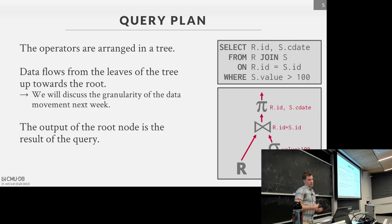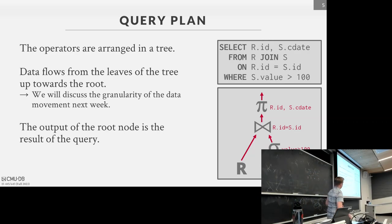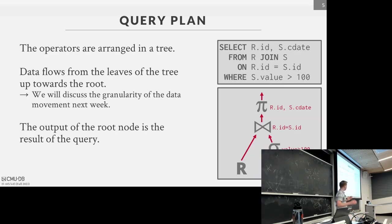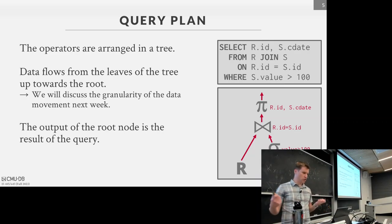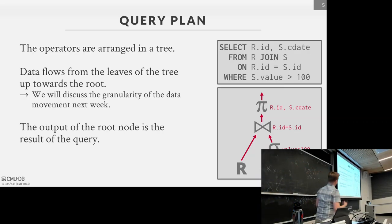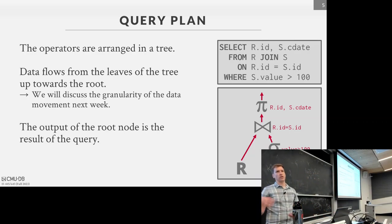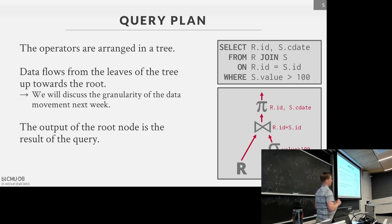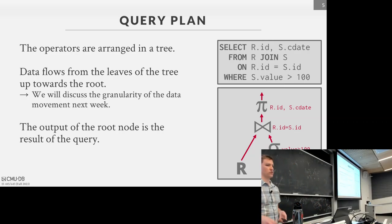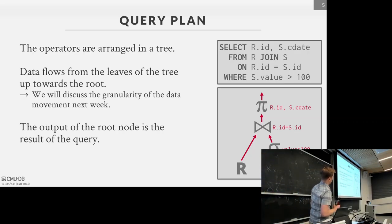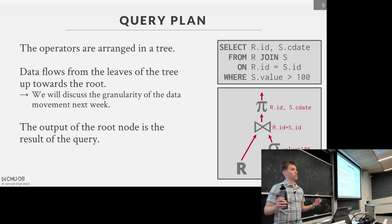We're back to looking at query plans. We talked about how we turn SQL into logical operators and eventually physical operators. Data starts at the leaf nodes — our base tables — and flows all the way up. There may be a filter, like in this case a filter on S, and then it reaches the join operator. The join operator does a comparison and emits tuples based on tuples that satisfy the join predicate. At the root of the tree you get the actual results of the query plan.